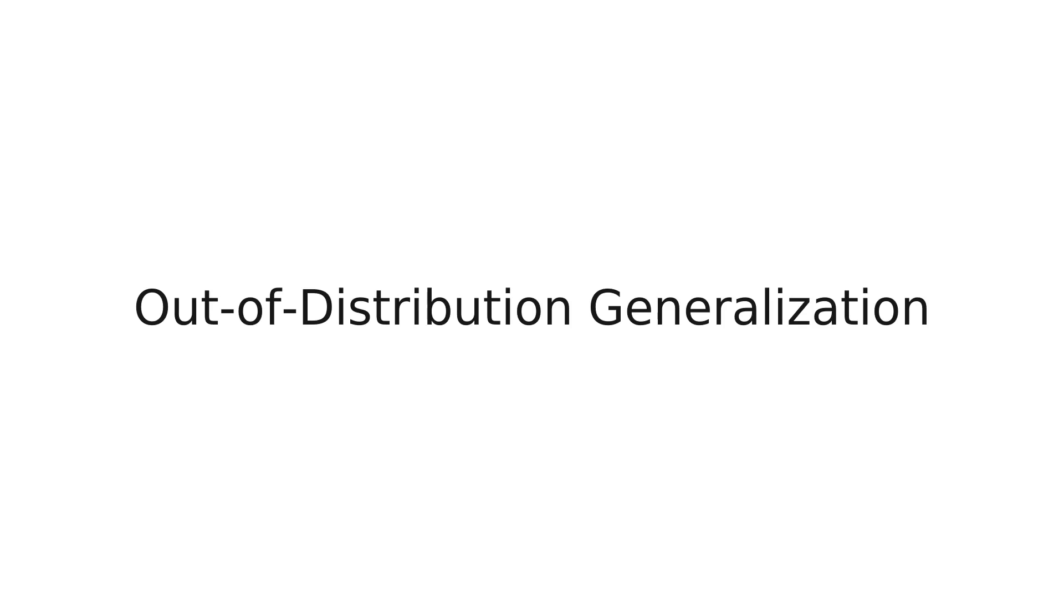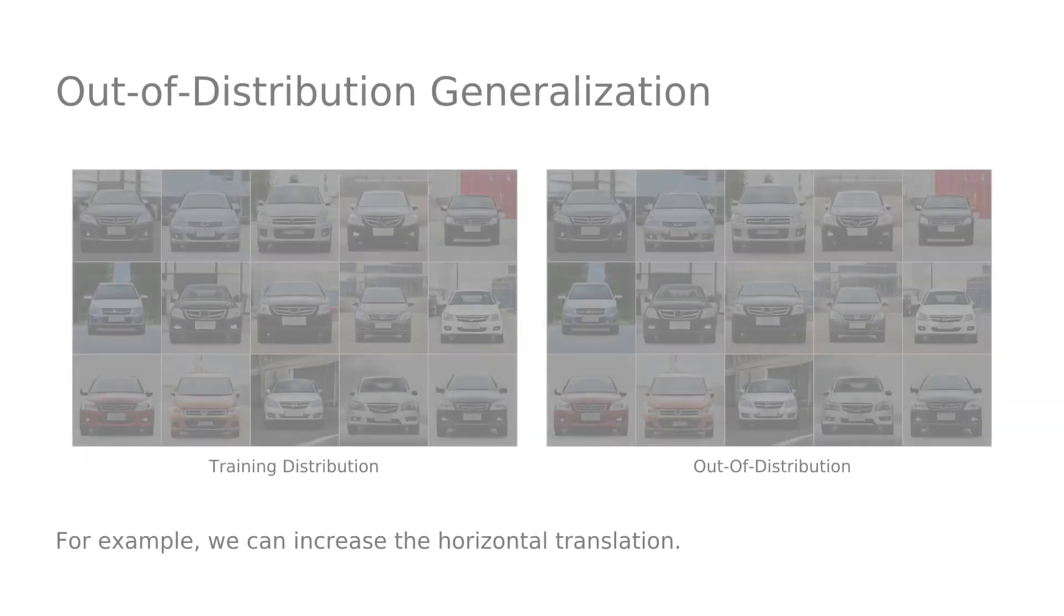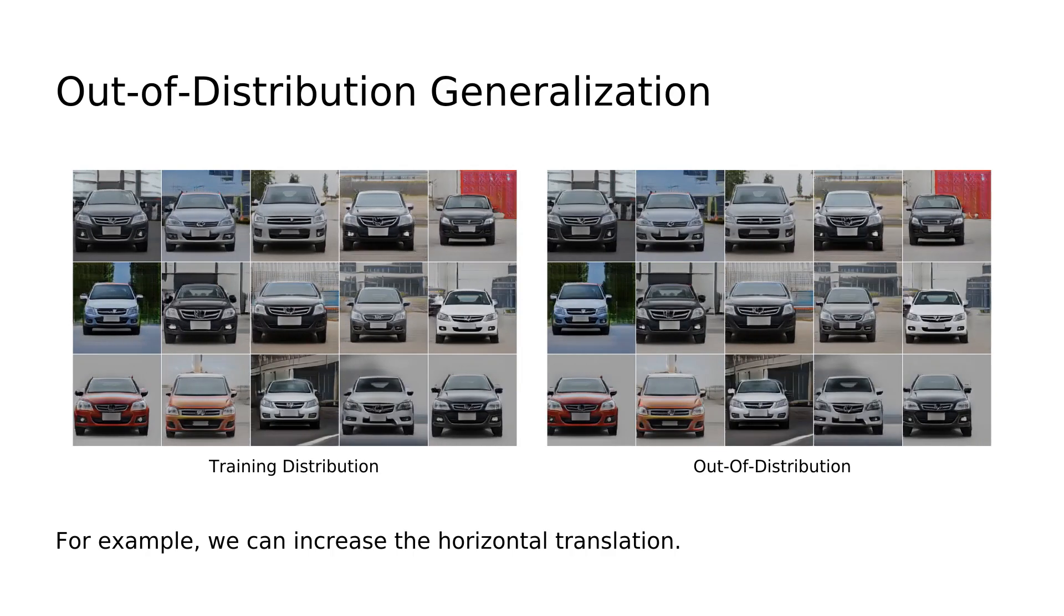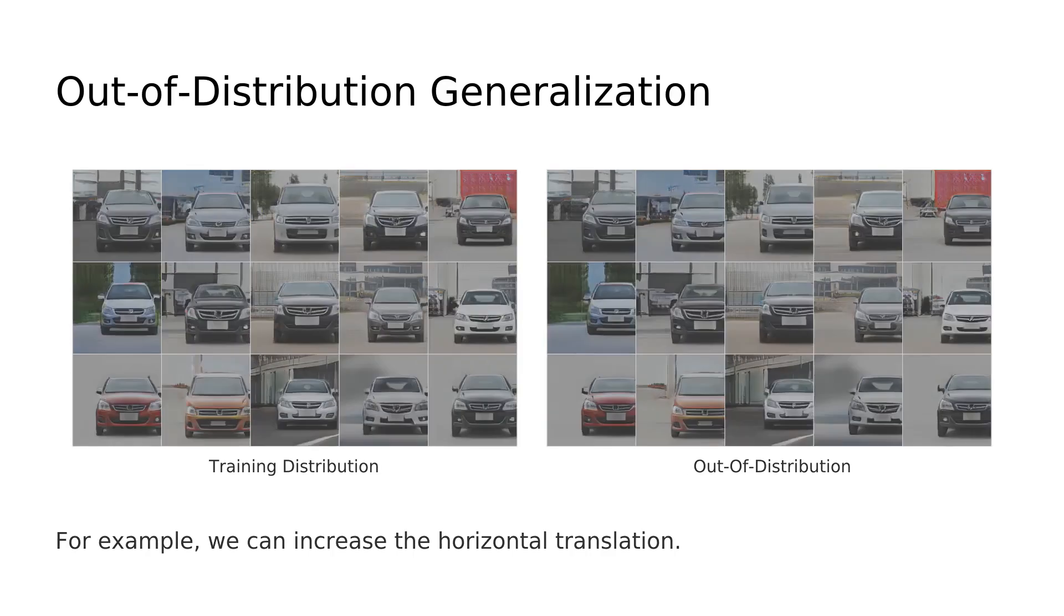Let's have a look at how well our model can generate out of distribution samples. For example, we can increase the horizontal translation range over what the model has seen during training.